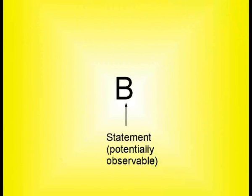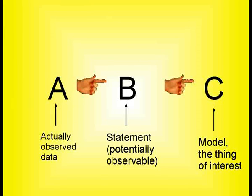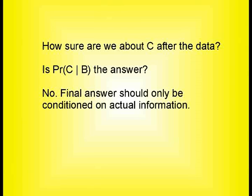Imagine that there's a statement B whose truth value could possibly be observed. If it was observed, it would be evidence for a particular model C. However, you haven't directly observed B. Instead, you've got data A that makes B more likely — i.e., you've got evidence for that statement. So have you now got evidence for the underlying model C, and how is it going to behave? You could condition on the probability of model C on B, but that would be using more information than you've got. Conditioning on things you don't know is fine when you're considering several alternatives, but it's not what we're after in the end.